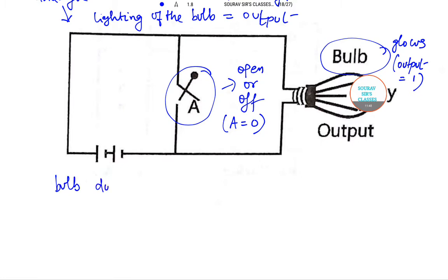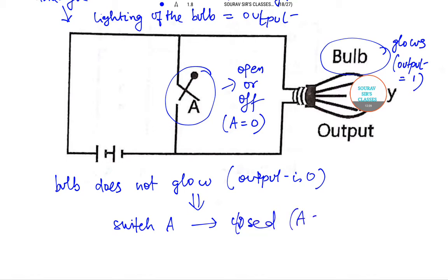And the bulb does not glow, that means the output becomes 0 when switch A is closed, that is A equals 1. So this is all about the NOT gate, the analog circuit, and the different cases, as well as we have also discussed the truth table.